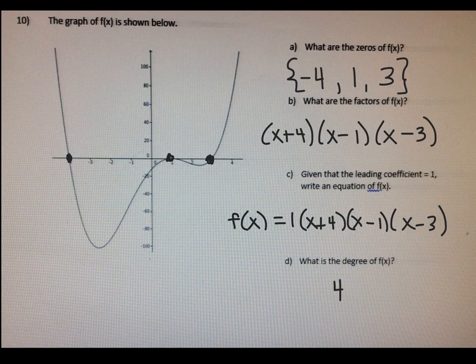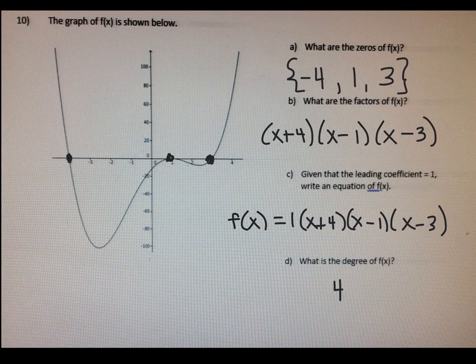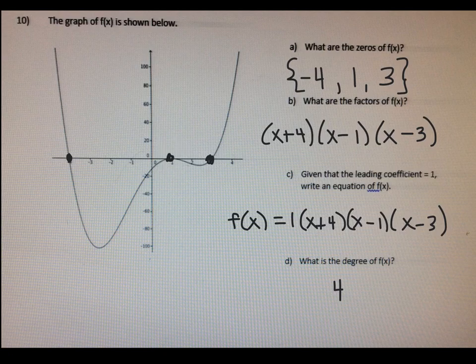Wait, hold on. If we go back to part c, x times x times x would be x cubed, not x to the fourth. So I must have made a little mistake right there. Let's go back and talk about why. Wherever the graph just crosses through the x-axis — at x equals negative four and at x equals three — we say that has multiplicity of one, which means there's just one of these roots. But if the graph bounces off the x-axis — it comes up to the x-axis and then bounces off — then we say this is a root that has multiplicity of two. So please put this in your notes.